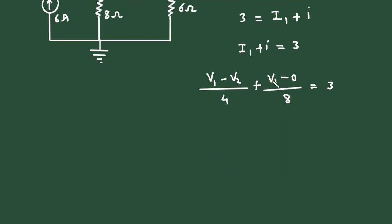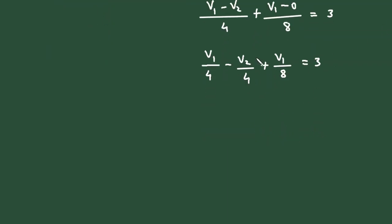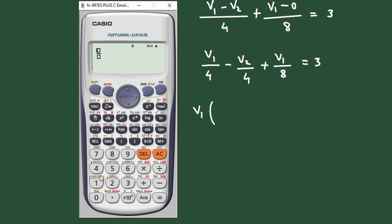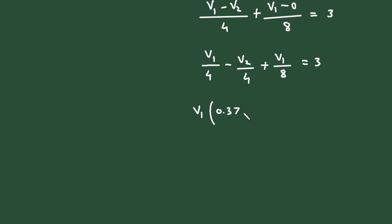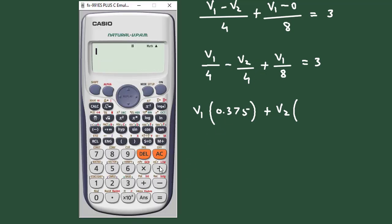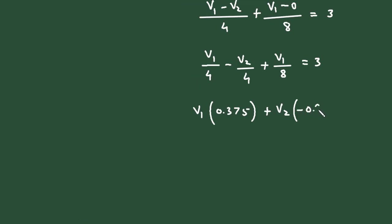Taking V1 common, it will be V1 times (1/4 + 1/8), which is 0.375, then plus V2 times (minus 1/4), which is minus 0.25, equals 3. Let's call this equation number 1.